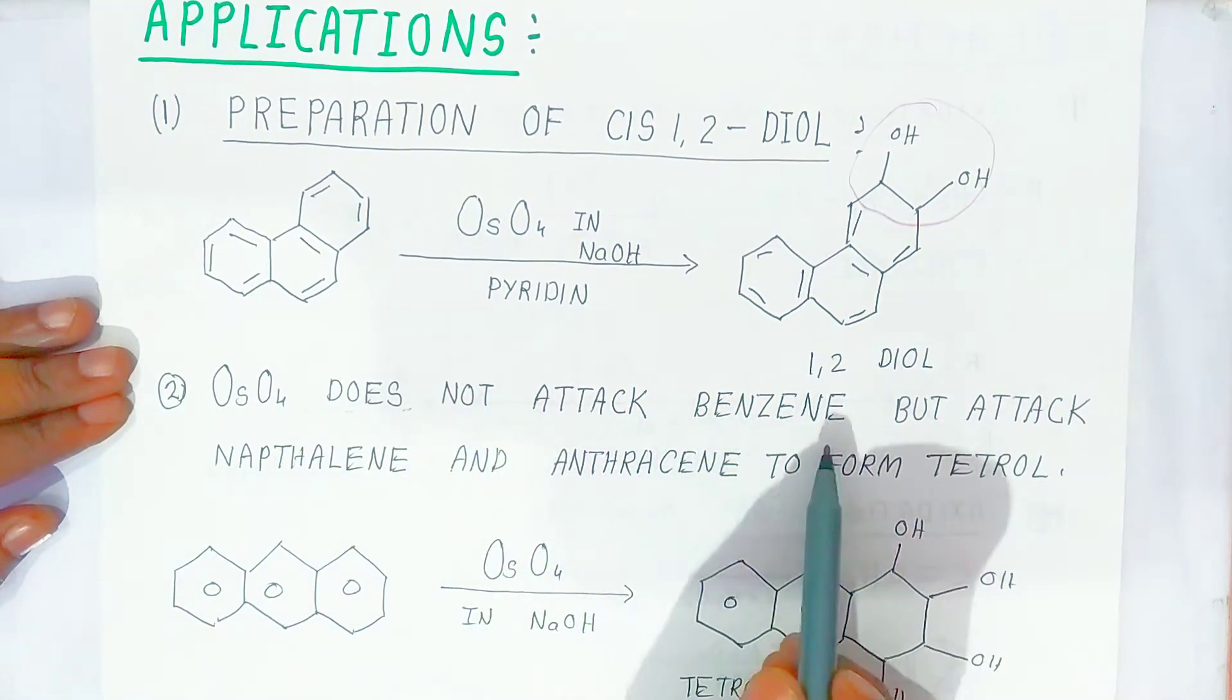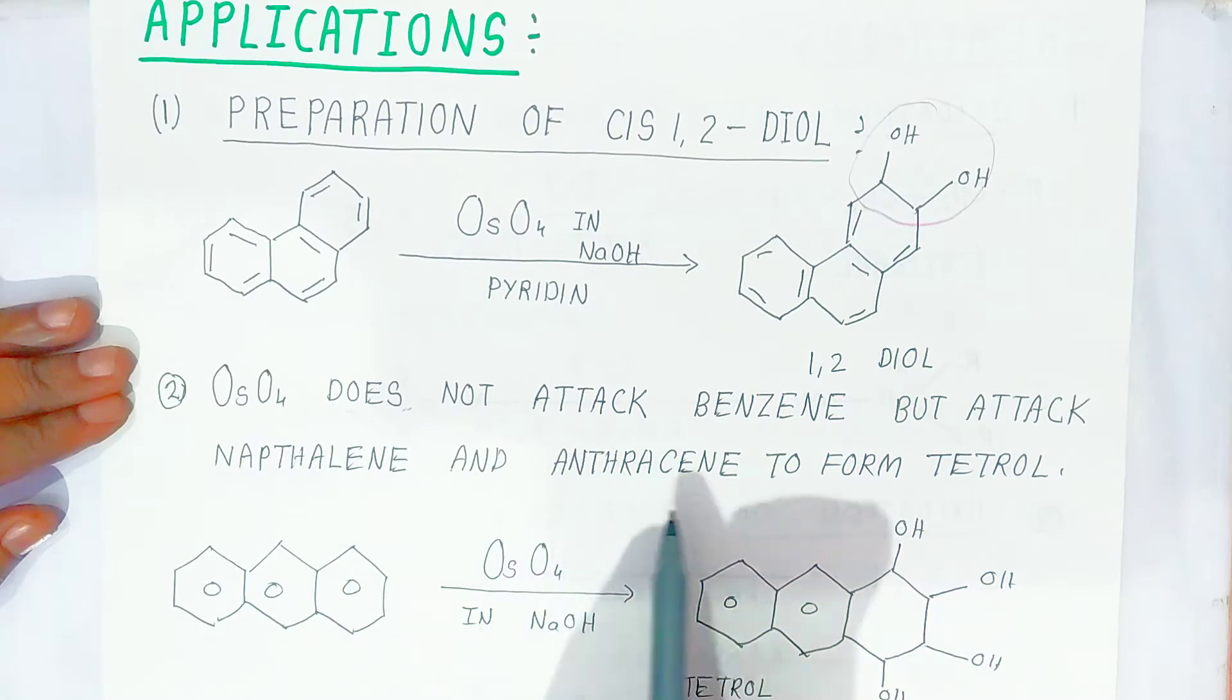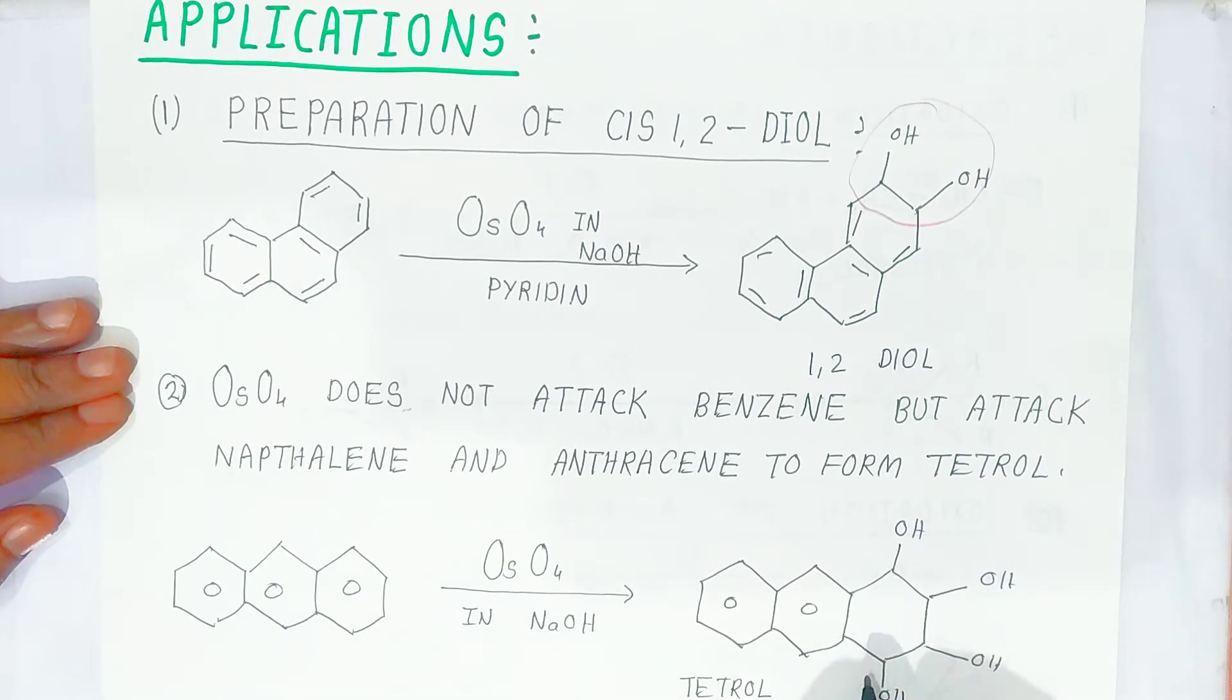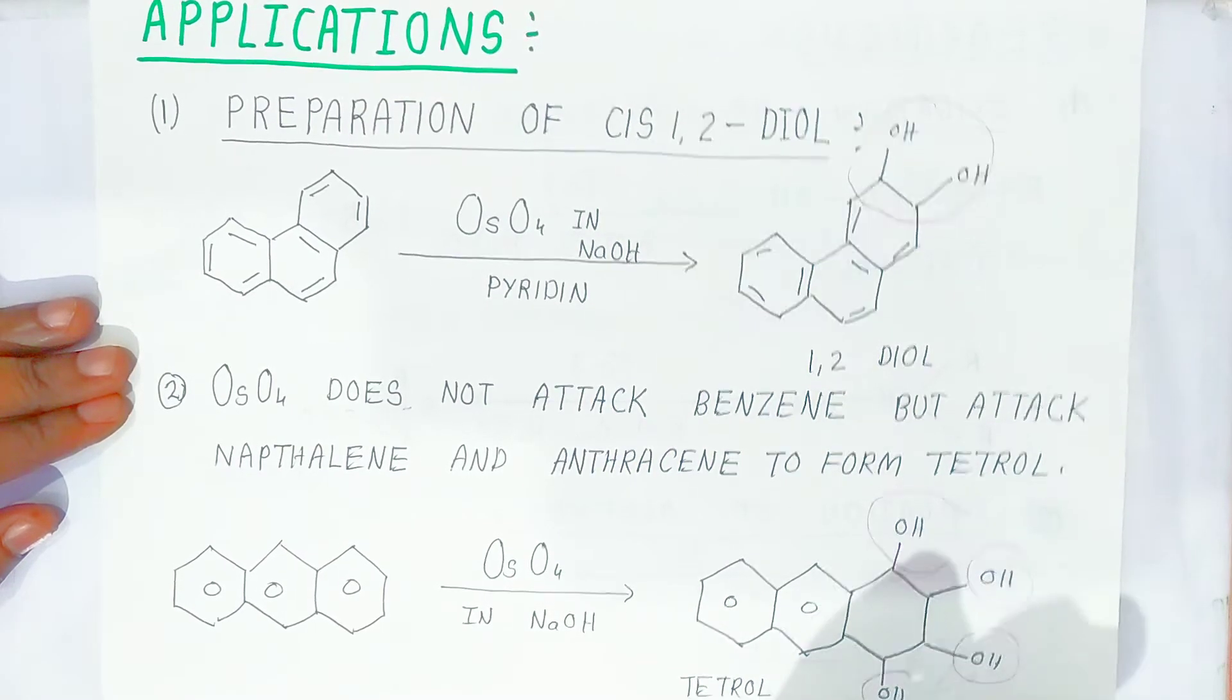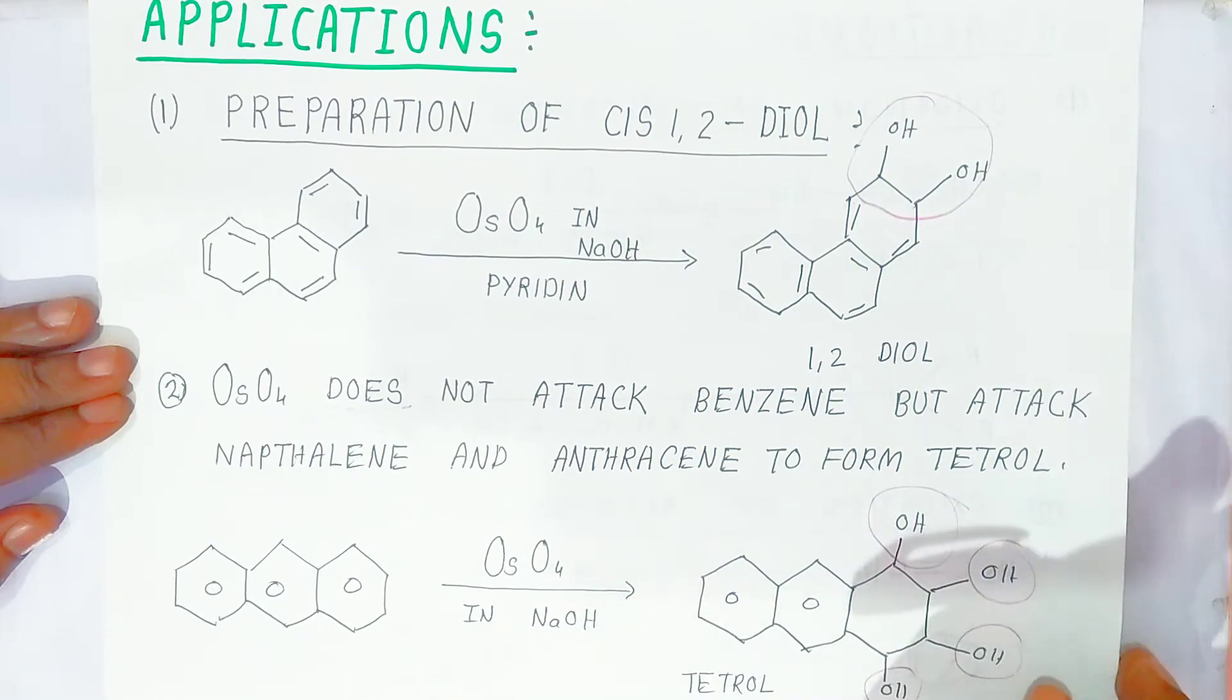Osmium tetroxide does not attack benzene but attacks naphthalene and anthracene to form tetrol. Here students, this is anthracene. It will form tetrol. That means all the double bonds which are present here are converted into single bonds and addition of four hydroxyl groups. So oxidation is taking place. This is a very important reaction.